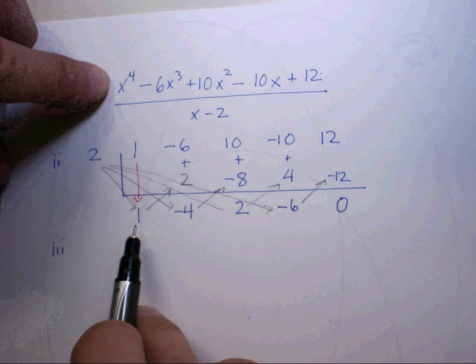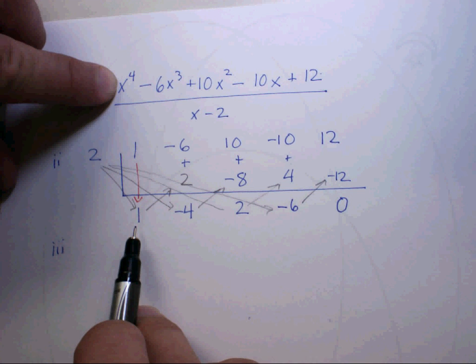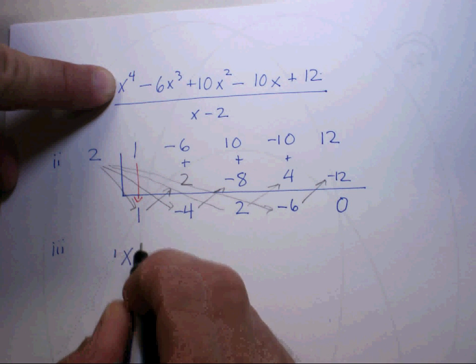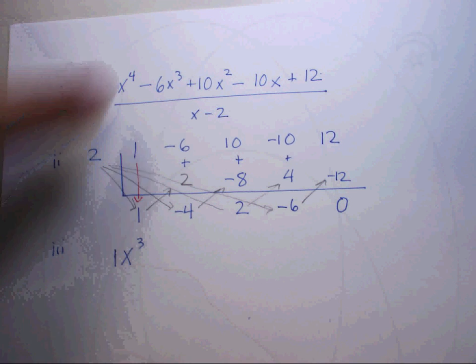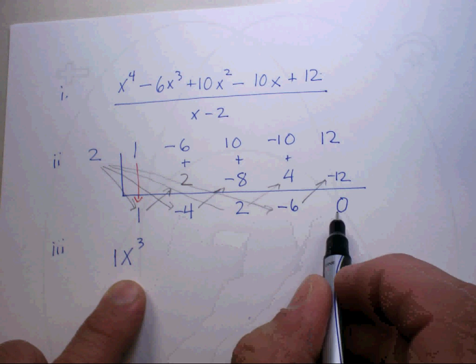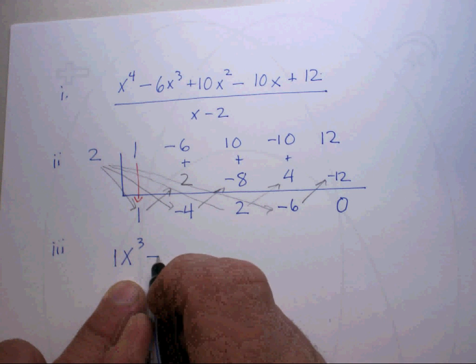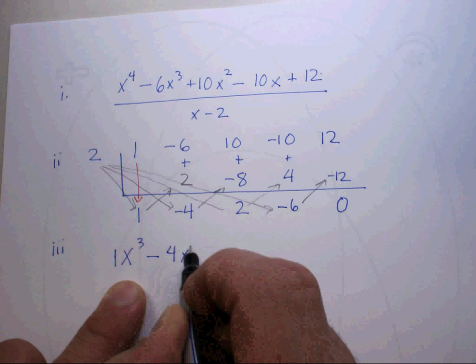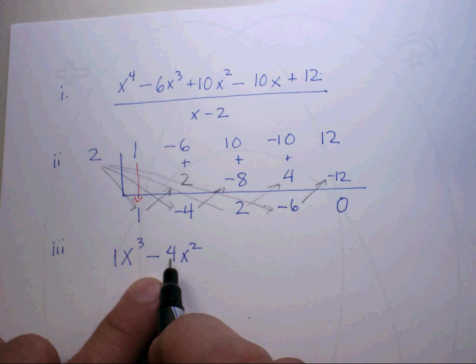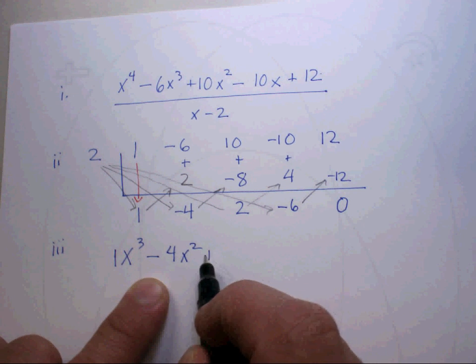Now we have to interpret what these numbers mean. We'll do that in our next step. The coefficient now is 1. Go to your original problem, and it's x to the 4th. What you've done is you've just taken away one of the x's. So you've done 1x to the 3rd. And now you continue down in a descending order from there. These are the coefficients, remember.